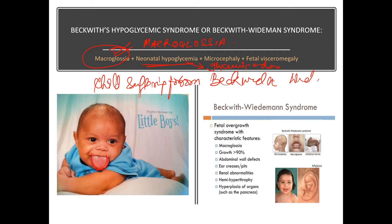The glycemic index is low — meaning hypoglycemia. Hypoglycemia is the opposite of hyperglycemia which is diabetes. Then microcephaly — meaning the skull is small. You can see here, this is microcephaly, the skull is small.